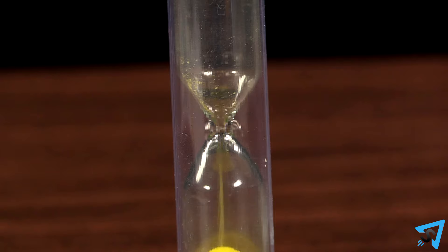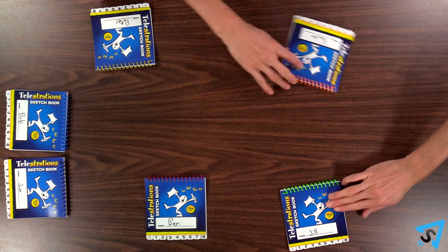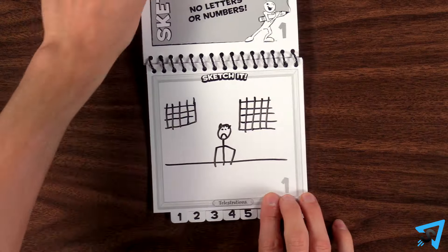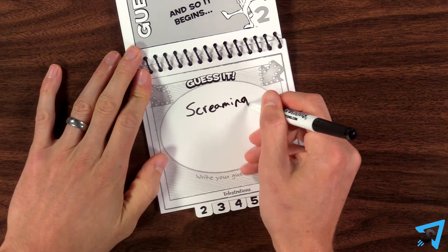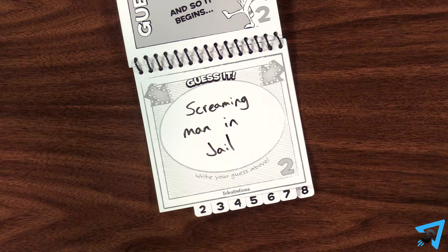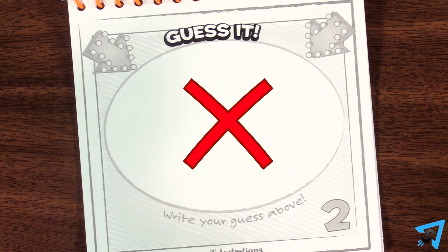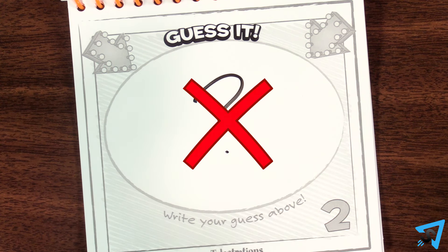Once the time runs out, everyone stops and passes their book to the player to their left. Each player now looks at the drawing, then flips the page and writes the word or phrase they think the picture is of. You may not leave the page blank or draw a question mark. You must write something.